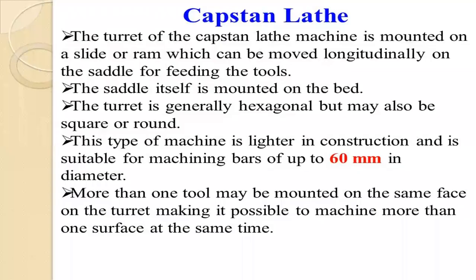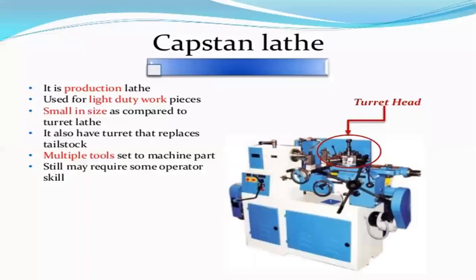This type of machine is lighter in construction and suitable for machining bars of up to 60 mm in diameter. More than one tool may be mounted on the same face of the turret, making it possible to machine more than one surface at the same time.